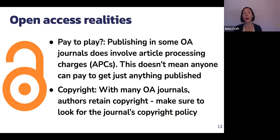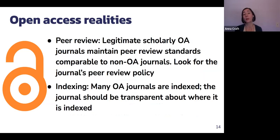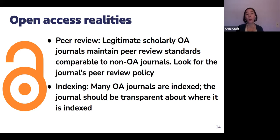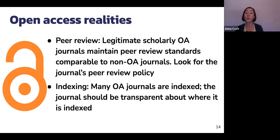Regarding copyright, many open journals have authors retain copyright, but look for the journal's copyright policy before submitting your work. With peer review, legitimate scholarly journals that are open maintain peer review standards comparable to closed journals — look for that policy and ask the journal or a librarian if you have questions. On indexing: indexing makes content more discoverable and includes getting journals into indexes like Google Scholar, EBSCO, or ProQuest. Many open journals are indexed in major scholarly databases, but the journal should be transparent about where it is indexed.